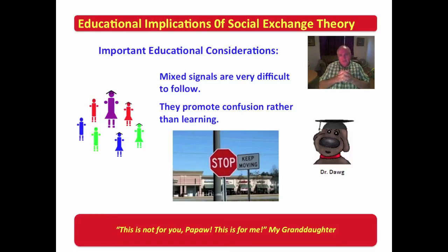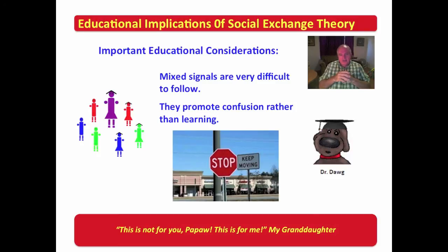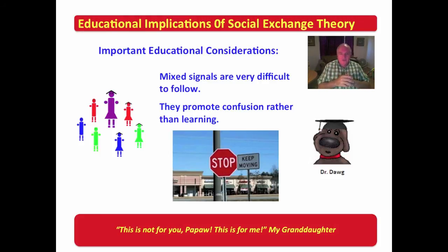I want to share with you this sign. Suppose you come up to this intersection — this is actually on a military base; my son-in-law took it for me. Look at these two signs right here: 'Stop' and 'Keep Moving,' side by side. Suppose you pull up here and the base police are sitting right there beside that — what are you going to do? Stop or keep moving? Mixed signals and inconsistent behavior, not providing what is promised, do nothing but promote confusion rather than enhance learning.